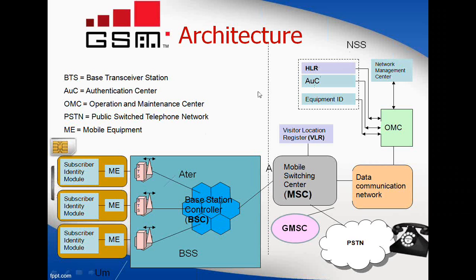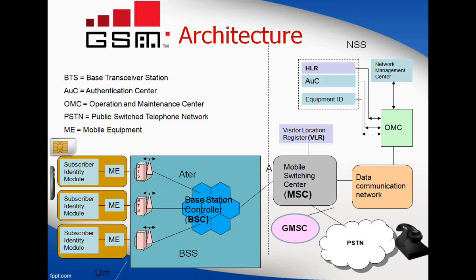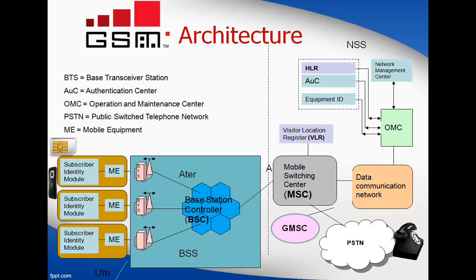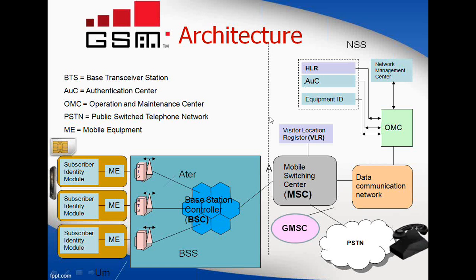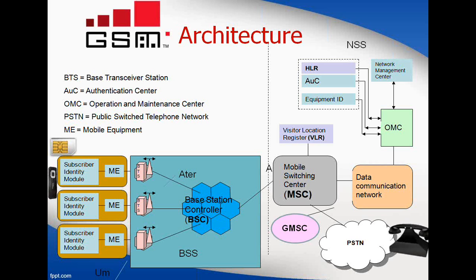HLR is the Home Location Register, which contains all the databases of the subscribers — for example, in a Vodafone network the HLR contains all subscriber details. VLR is the Visitor Location Register, which handles whenever a subscriber enters from one location to another, mapping the information by checking it against the HLR. VLR plays a major role in roaming. We also have different interfaces — how one component talks to another — because the communication level between BTS and BSC may differ from BSC to MSC.